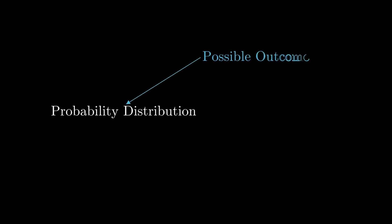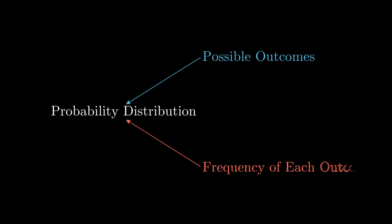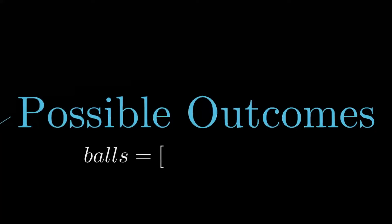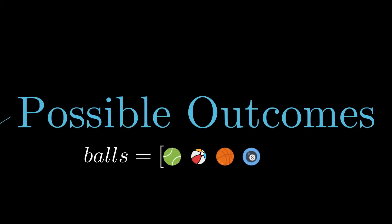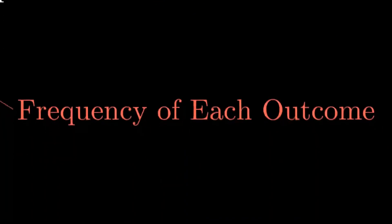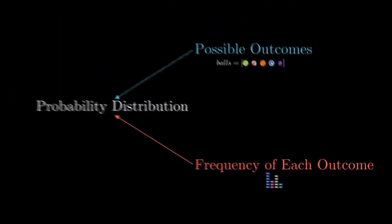A probability distribution can be found by considering two things: the possible outcomes and the frequency of each outcome. Possible outcomes are the entities you get after a random process, and the frequency is just the number of times those certain outcomes have occurred.